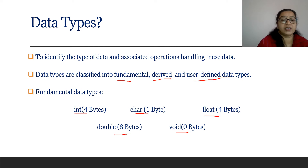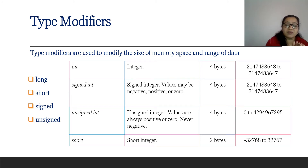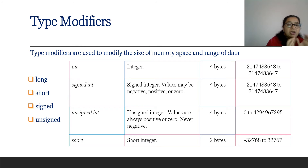Void means zero bytes — we will study void usage later. Now, type modifiers: we can make modifications to predefined data types. The type modifiers are used to modify the size of the memory space and the range of data. The four modifiers are: long, short, signed, and unsigned.